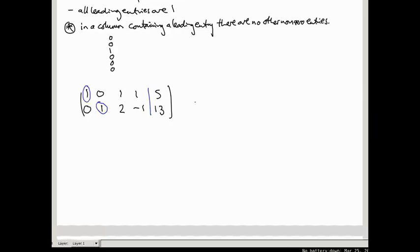So what is the system of simultaneous equations that corresponds to this? Well, if our variables are W, X, Y, Z, we get W plus Y plus Z equals 5. And in the second row, it's X plus 2Y minus Z equals 13.